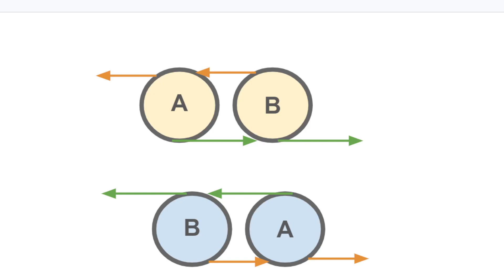I'm going to show you how to reverse a linked list. As you can see here, the previous is going left and next is going to the right. But if you're doing a linked list, you just want to reverse everything. You want to make it where next is going to the left and previous is going to the right, so that means everything will reverse.